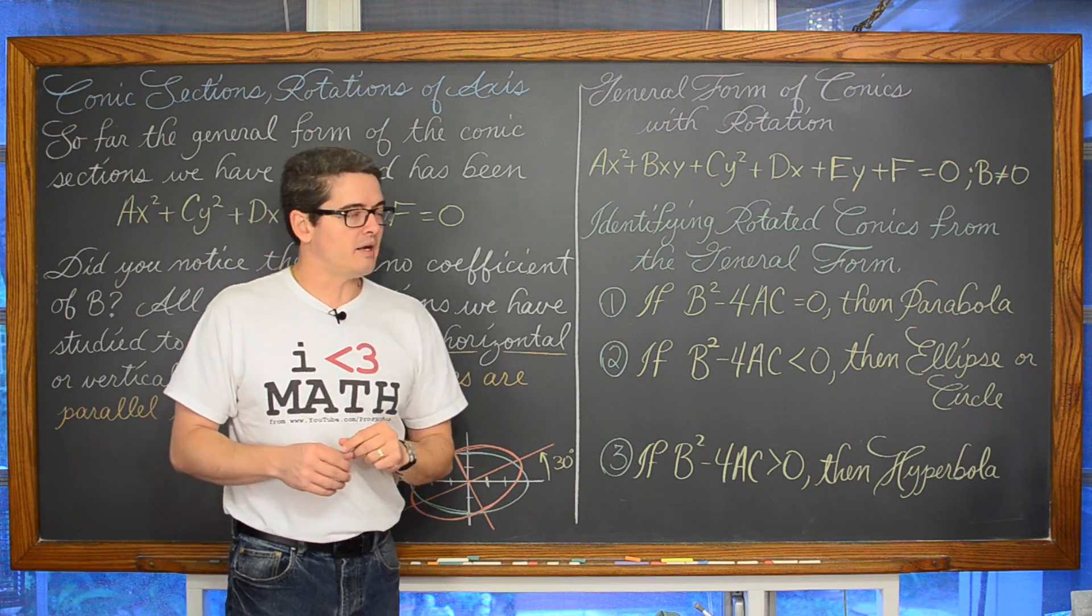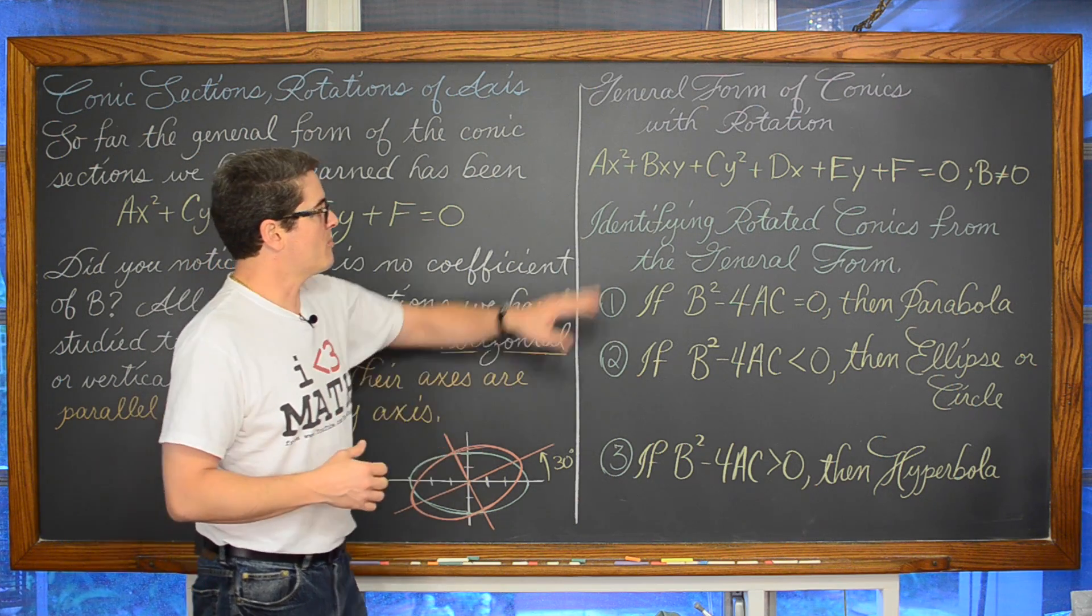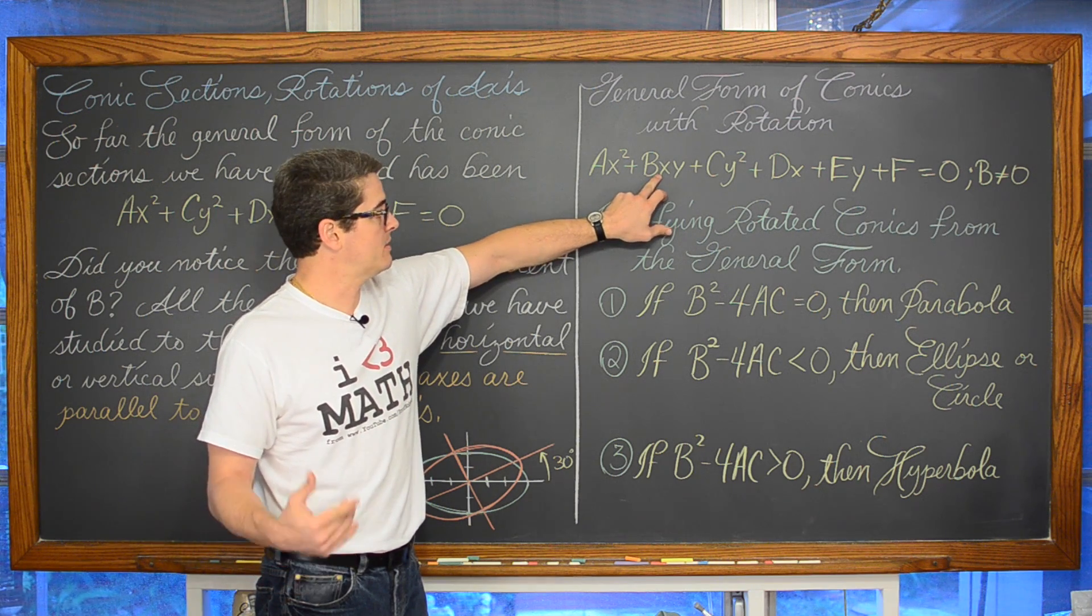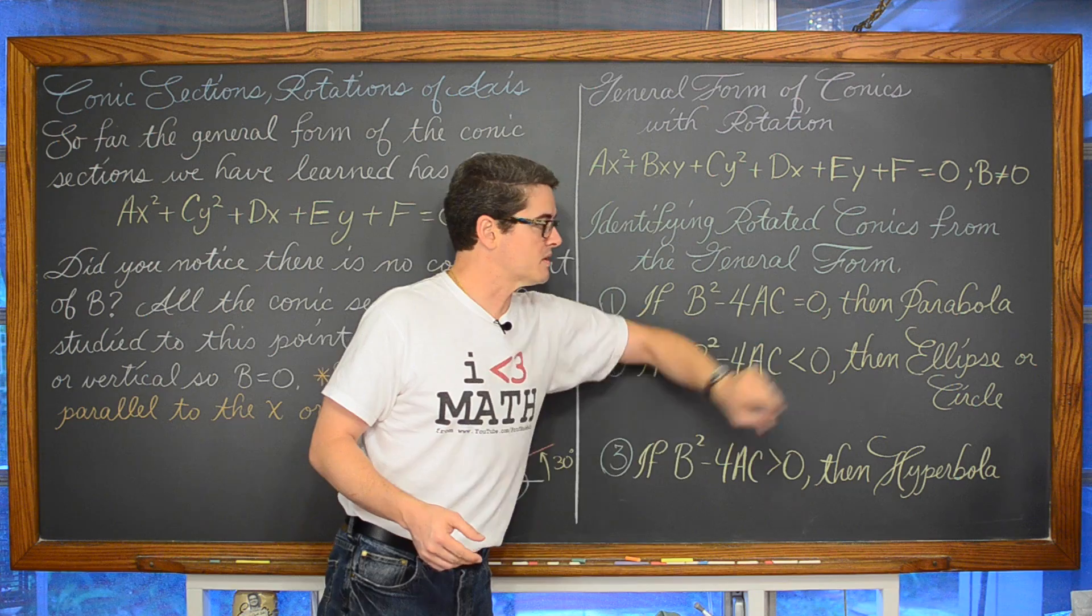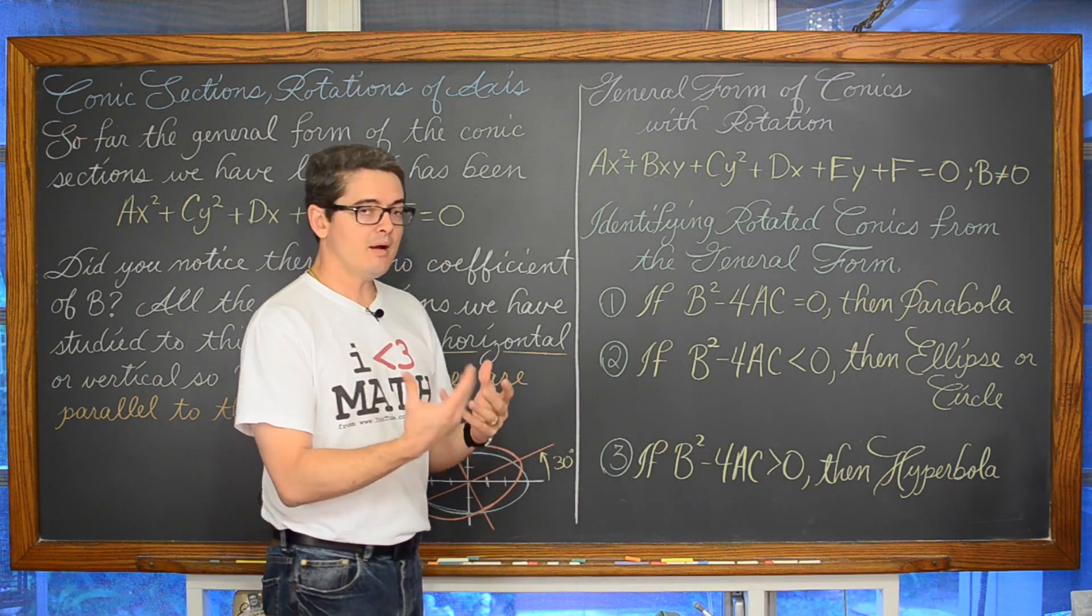Let's start off by identifying the rotated conic in this general form when there is a rotation. Well if b squared, the coefficient of the xy term, b squared minus 4ac is equal to zero, then you are looking at a parabola.